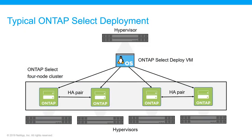In a typical ONTAP SELECT multi-node deployment, the ONTAP SELECT instances run as virtual machines on an ESXi or KVM hypervisor. The ONTAP SELECT deploy instance also runs as a virtual machine on a hypervisor. It's important to understand the network configurations when you deploy an ONTAP SELECT cluster. Communication between ONTAP SELECT cluster nodes, the deploy virtual machine, and the external network must be configured correctly.